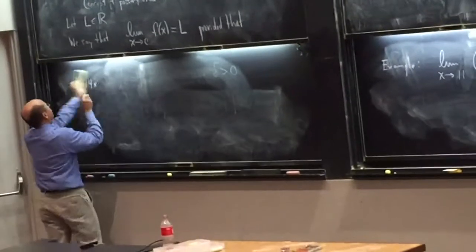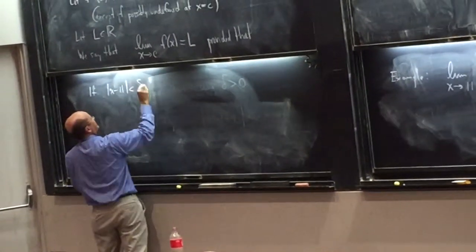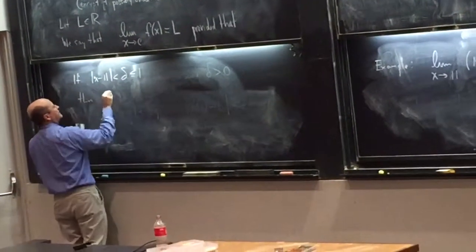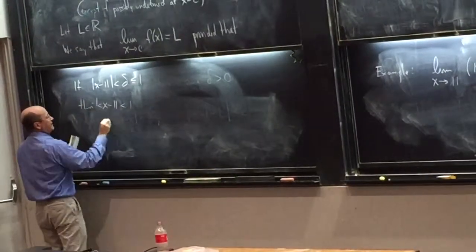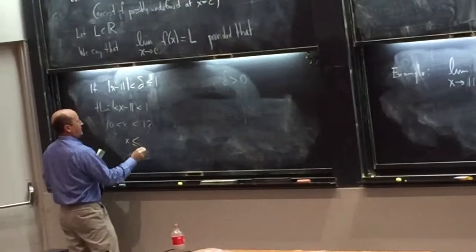14x to the fourth. Let's see. If x minus 11 is less than delta equal to 1, then x minus 11 is between 1 and minus 1. That means that x is between 12 and 10, which means that x is, oh I don't know, less than 100.